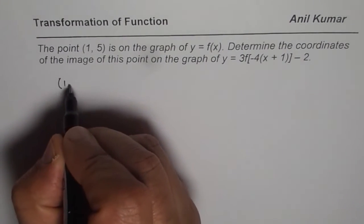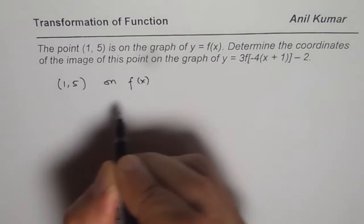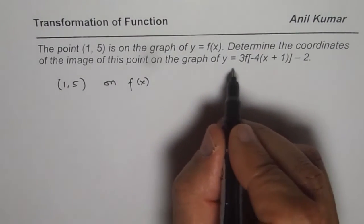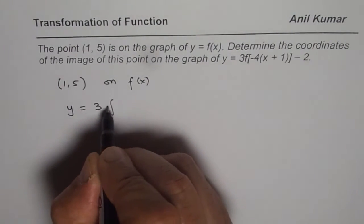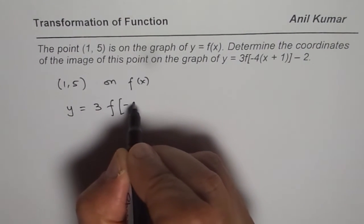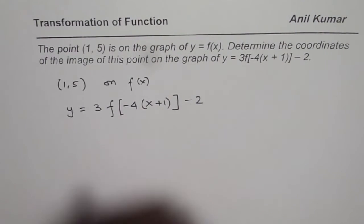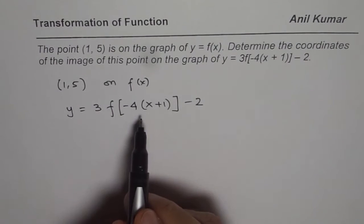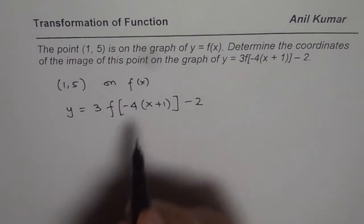So we are given the point (1,5) on f(x). Now we want to find its image on this transformed function, which is y = 3f[-4(x+1)] - 2. So let us look into the transformation. What happens to the x values?